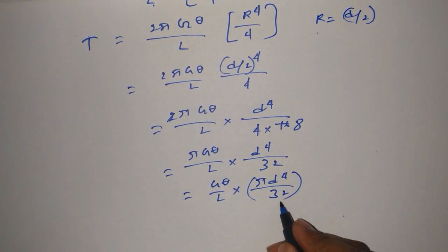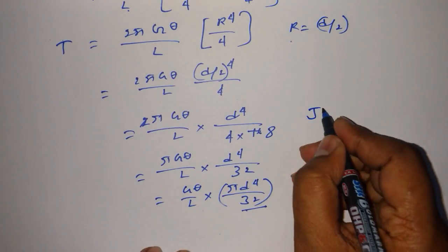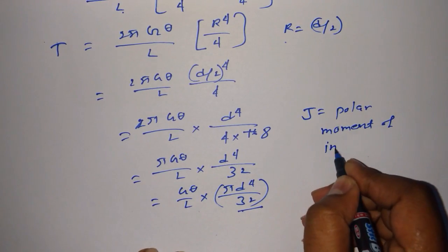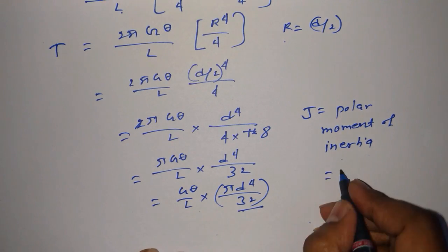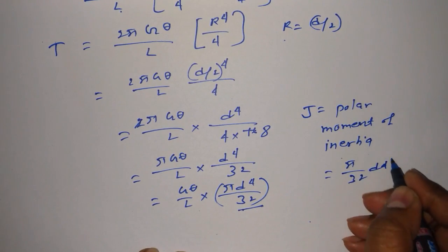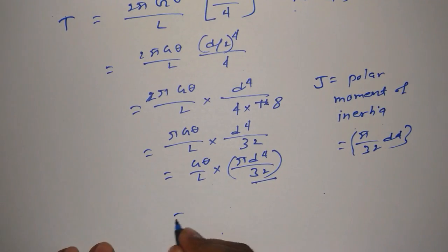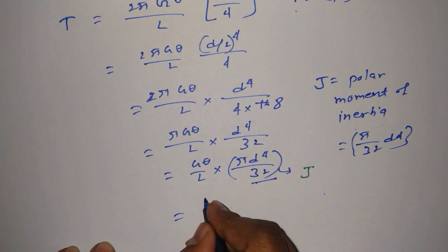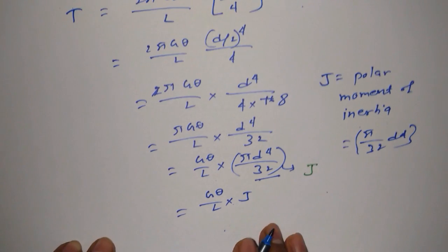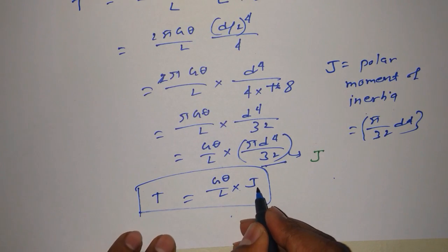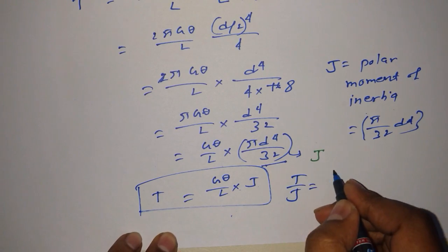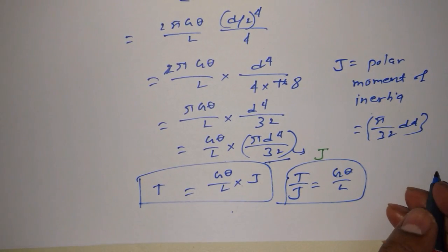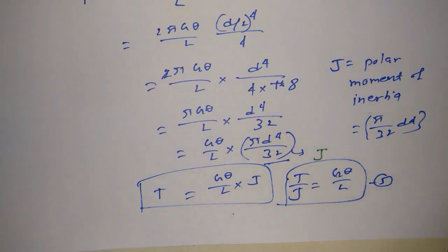Now, we know that J — the polar moment of inertia — is equal to pi/32 times d⁴ for a circular cross-section. So we can write pi·d⁴/32 as J. Therefore T equals G·theta/L times J. Sending J to the other side: T/J equals G·theta/L. Let's call this equation number 5.